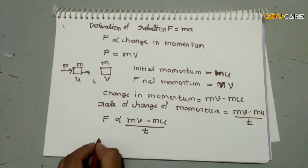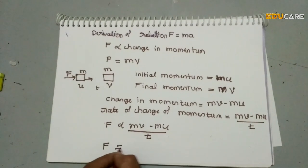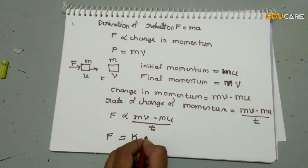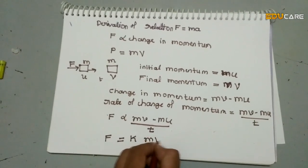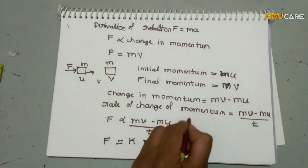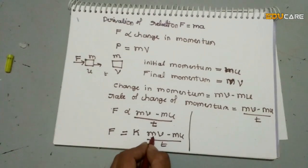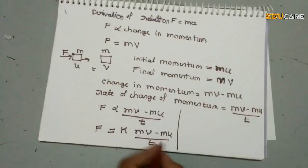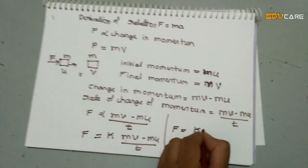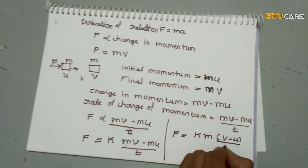In order to remove the proportionality symbol and replace it with an equality symbol, we multiply a constant k on the right-hand side. Then the equation becomes f is equal to k into m into (v minus u) divided by t. We find that m is common in both terms, so we can take it common.